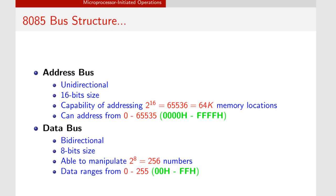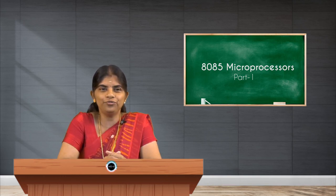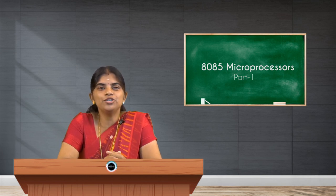The data bus is bidirectional, as mentioned, and is 8 bits wide. It can manipulate 2 to the power of 8, which equals 256 numbers. The data ranges from 0 to 255 — a total of 256 values — which in hexadecimal is represented as 00 to FF.